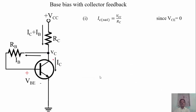Now let us find the saturation current IC. When the transistor is in saturation, the voltage drop across the transistor is equal to zero — that is, the voltage from collector to emitter is equal to zero, so VC equals zero. Therefore, the saturation collector current IC can be written as VCC divided by RC.